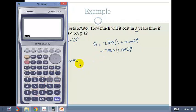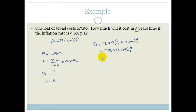So I always tend to do the brackets first. So go 1.096 all to the power of 3. And that gives me 1.32. So that is equal to 7.50 times 1.32. You don't have to write that part out. I'm just writing it out so you can see where I get the numbers.